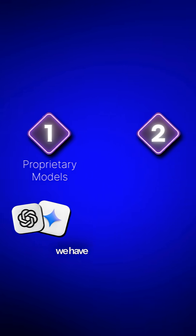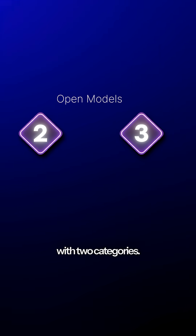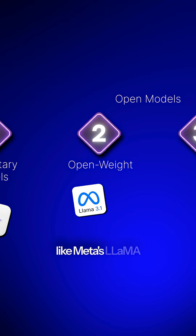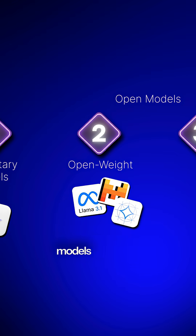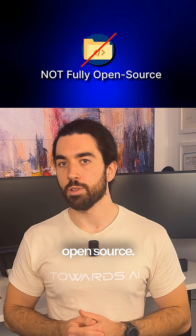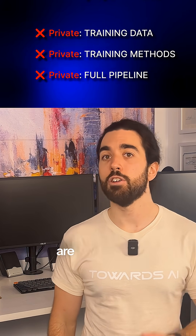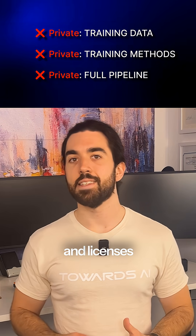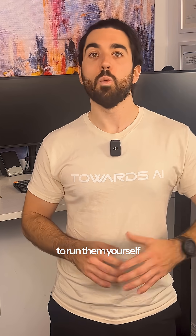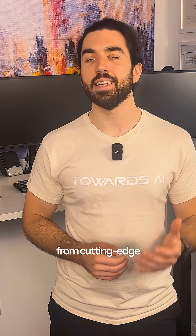On the other side, we have open models with two categories. First, open weight models. These models, like Meta's Llama 3.1, Mistral models, or even Gemma models by Google, are released with their weights available to the public. However, they aren't fully open source — the training data and methods are usually kept private, and licenses can have restrictions. Open weight models give you transparency and flexibility to run them yourself while still benefiting from cutting-edge performance.